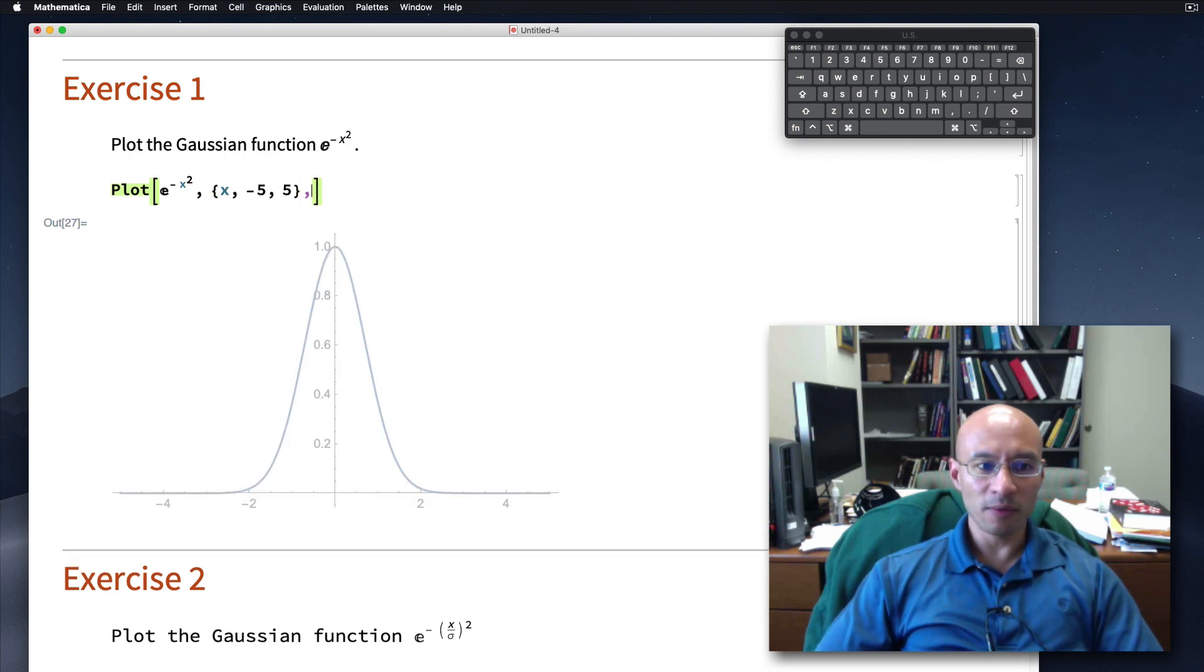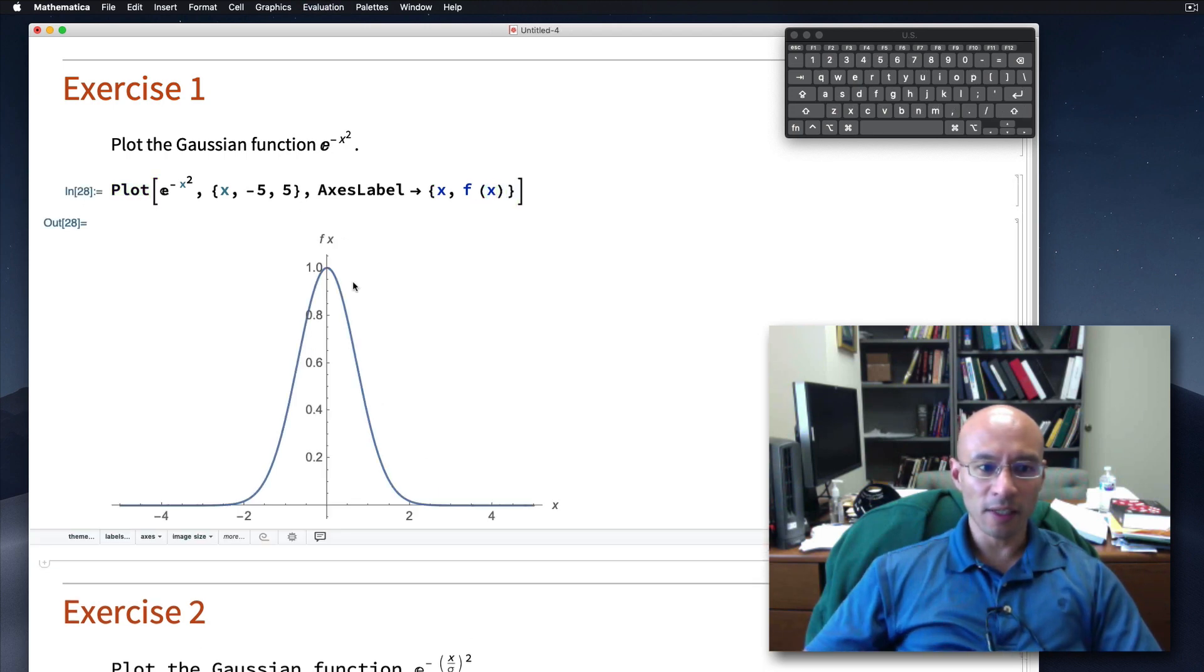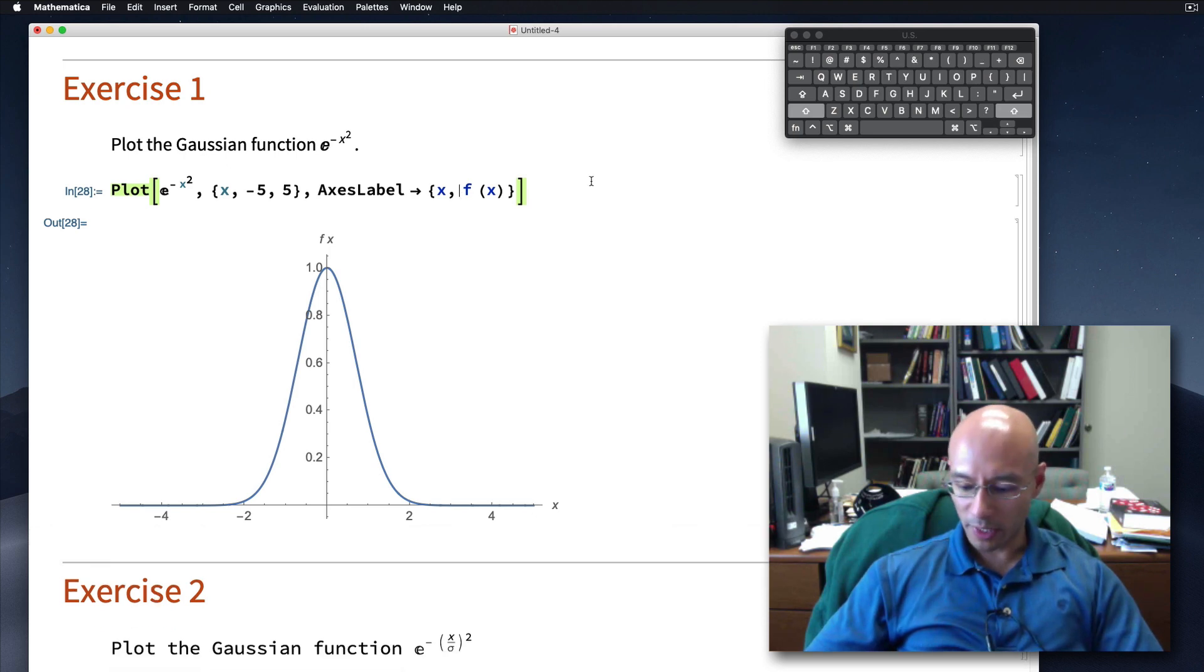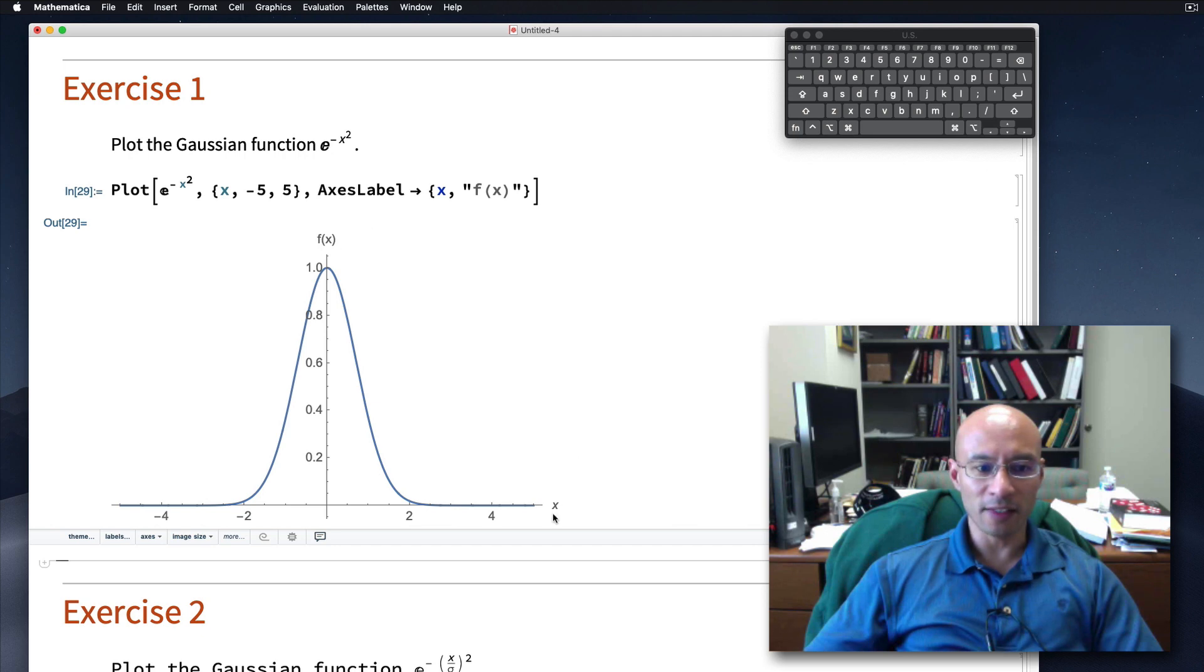Some things that I might want to do, specify axes labels. So type axes label. And tab completion is nice because it gives me this arrow also. I'm going to make a list. The first one is X and then maybe the next one will make it F of X like this. And what happens when I hit enter? It puts in X and then F of X. So it interprets this as a multiplication. So if I want it to show up exactly, well, I'll put in here quotes and run it again. And now it's F of X and X. Axes labels are very nice and they're important.